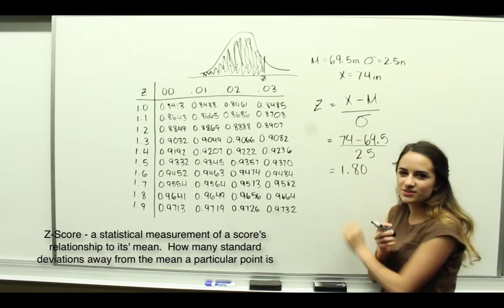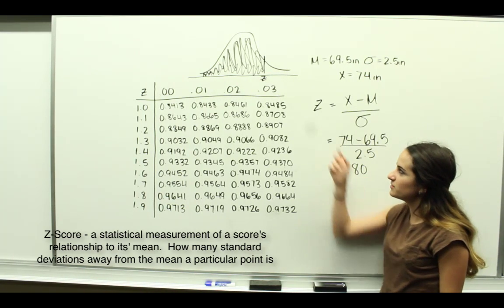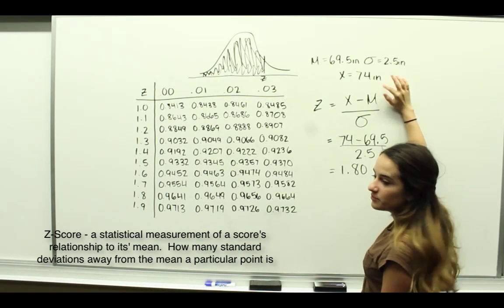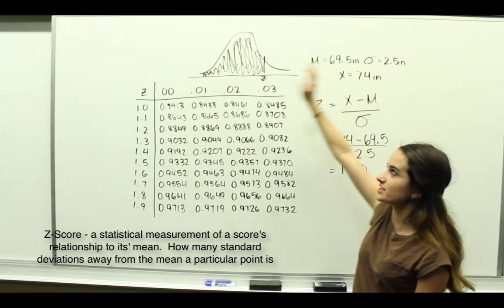Now that we have the Z-score, we're going to use this value and the table to determine the probability that someone would have a height of 74 inches in this population.